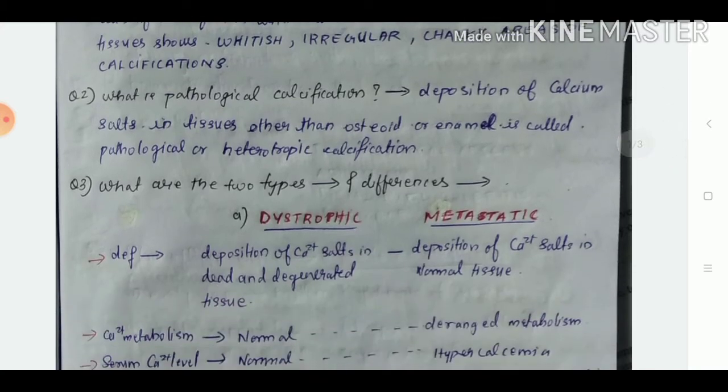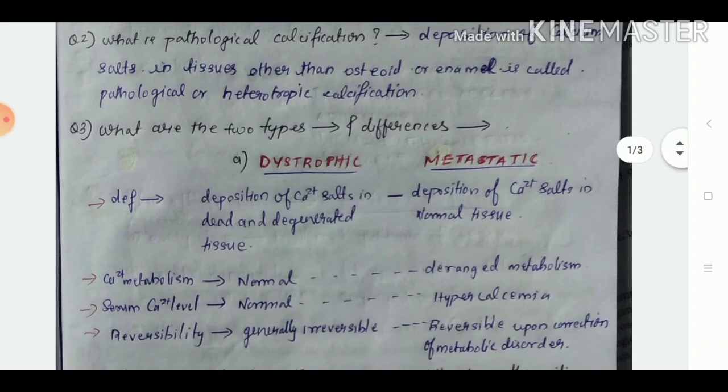The questions that can be asked are what is pathological calcification? This is deposition of calcium salts in tissues other than the osteoid or enamel, called pathological or heterotrophic calcification.